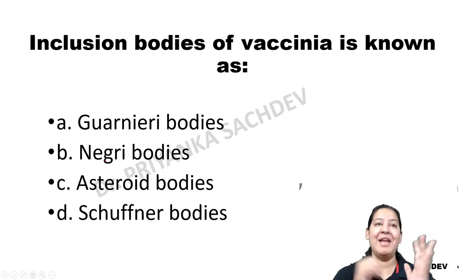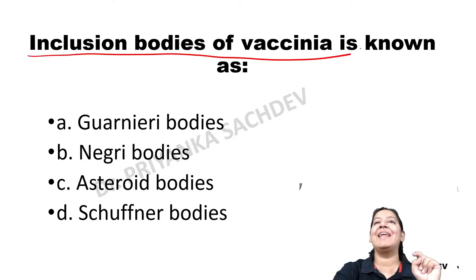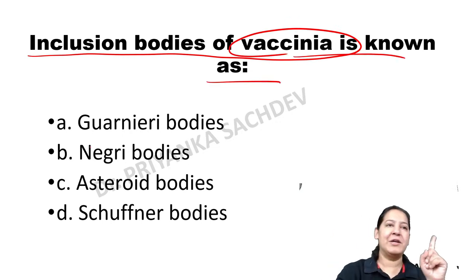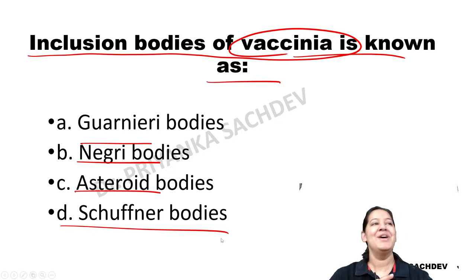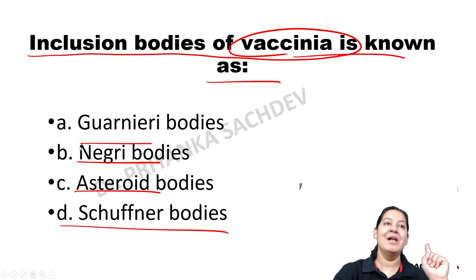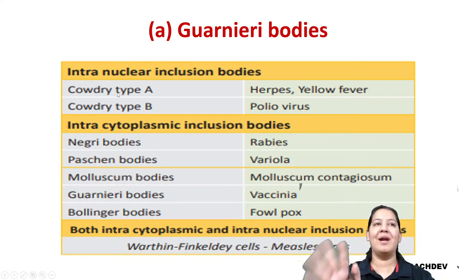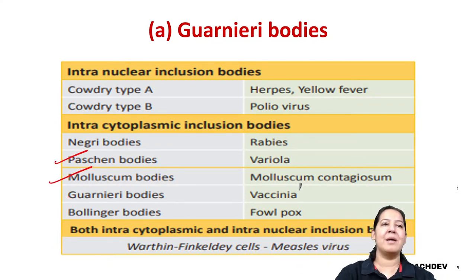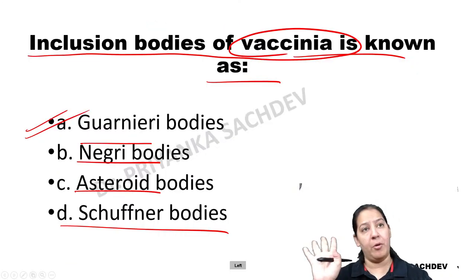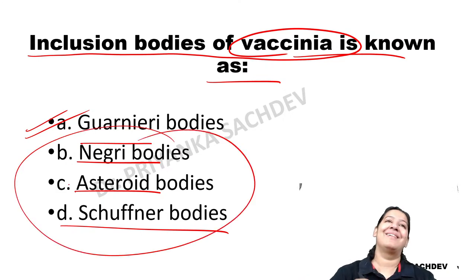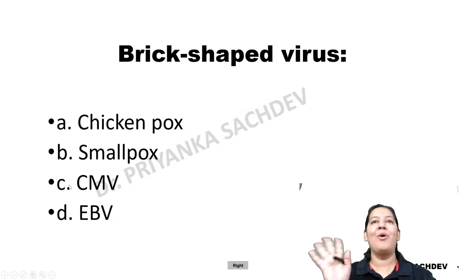MCQ: Inclusion bodies in vaccinia are known as — options: Guarnieri bodies, Negri bodies, asteroid bodies, Schiller bodies. The correct answer is Guarnieri bodies. You should know all inclusion body names: Paschen for variola, Guarnieri for vaccinia, Henderson-Peterson for molluscum contagiosum, Bollinger for fowlpox. Negri bodies are in rabies. Questions can come on any body from any virus.